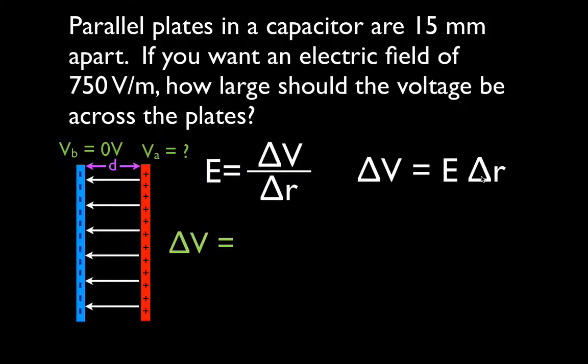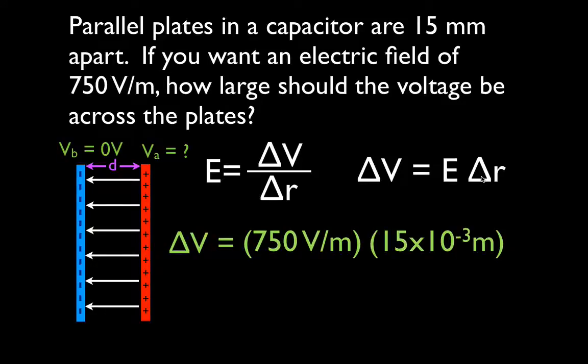So we get that the potential difference that we want is equal to the electric field strength, which is 750 volts per meter, times the distance, which 15 millimeters is 15 times 10 to the minus 3 meters. And all we do is multiply those, and that tells us that we want to put a voltage, a potential difference, across those plates of 11.25 volts.